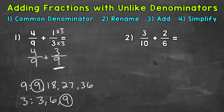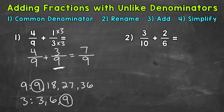Now that both fractions have a common denominator, we can add. When we add fractions, we add the numerators — the top numbers. Four plus three is seven, and then we keep the denominator the same: nine. Seven ninths is our answer. It's common practice to simplify fractional answers, so we look to see if we can break this fraction down. Are there any common factors between seven and nine besides one? No — the only common factor is one, so this is in simplest form. Seven ninths is our final answer.